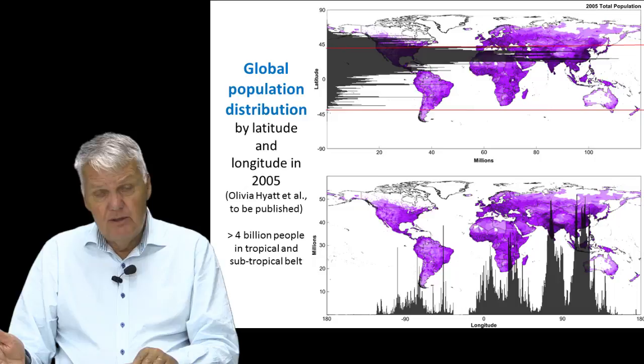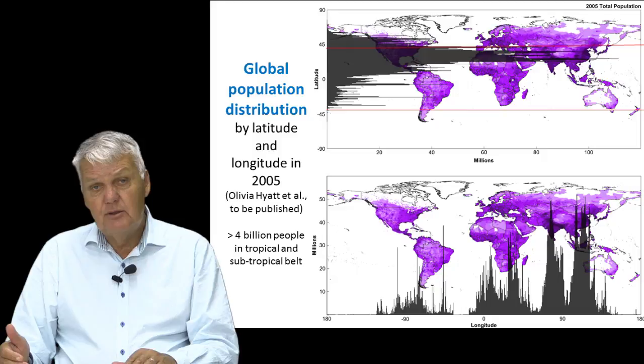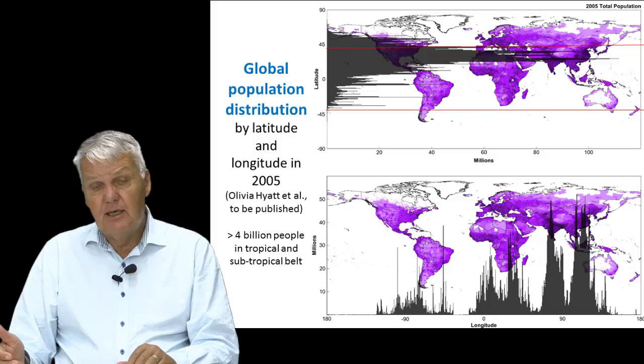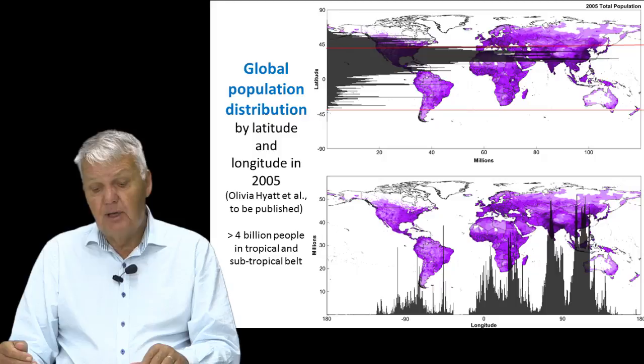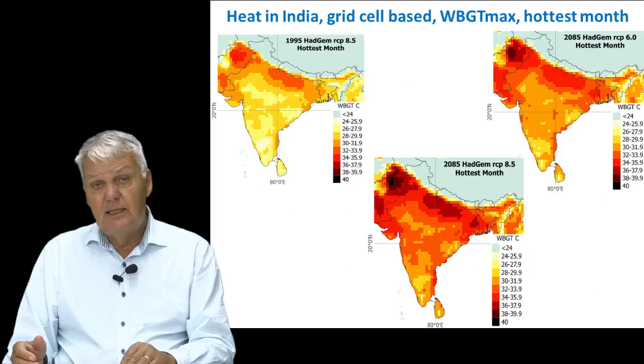It's also interesting to consider where people actually live in the world. About two thirds or more of the global population lives in the tropical and subtropical areas, where we already have the highest levels of heat. Over a year, some places have heat almost every day, and people have somewhat adapted to this. But as heat levels go up, it will be more and more difficult for them, particularly to work.